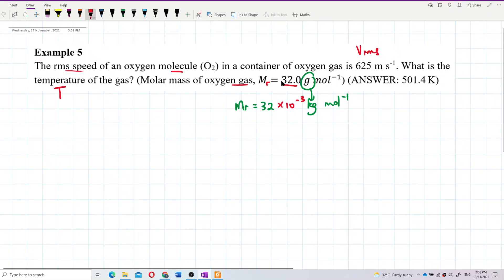Let's write down the formula. So v_rms is equal to square root of 3RT over molar mass. We are using molar mass.